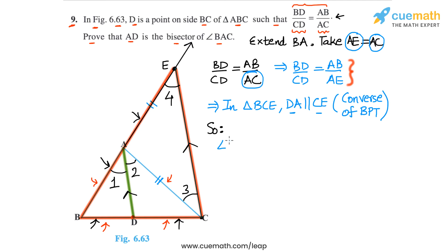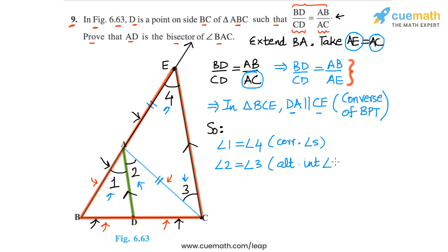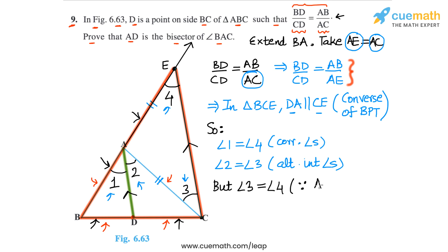Let's take angle 3 and angle 4 as well. Since DA is parallel to CE, angle 1 equals angle 4 because they are corresponding angles, and angle 2 equals angle 3 because they are alternate interior angles. And angle 3 equals angle 4 because of our construction AE equals AC — if two sides of a triangle are equal, the angles opposite those sides are also equal.